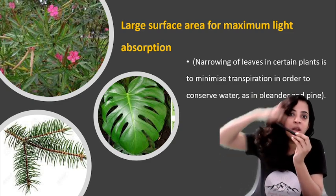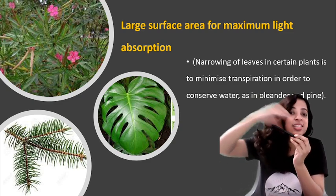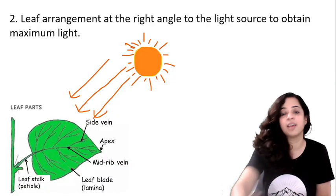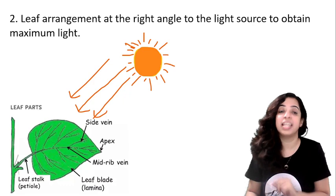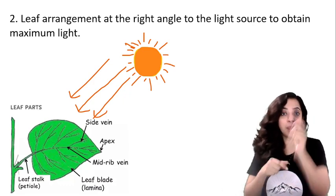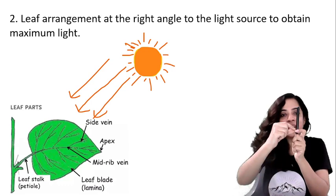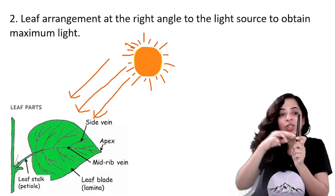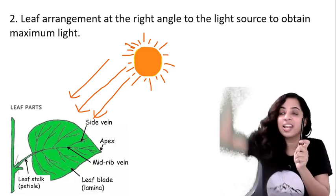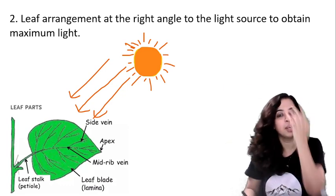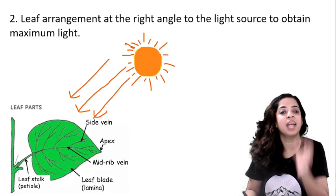So first point was large surface area. Second point is leaf arrangement. Whenever you see a plant like this, you can see this is the stem and the leaves are like this, outside, so the arrangement is such that when light falls on it, it falls at 90 degrees. Can you see the diagram and understand? So leaf arrangement at right angle to the light source to obtain maximum light.